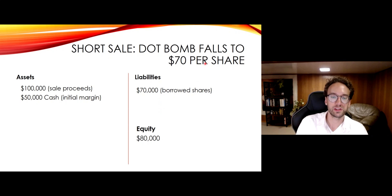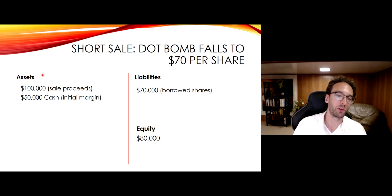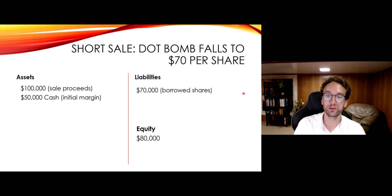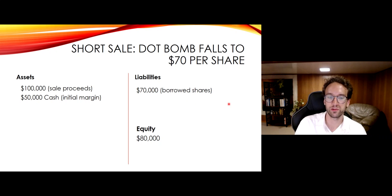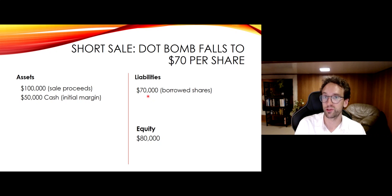Now, suppose this drops to $70 per share. Our assets stay the same — your assets are fixed in this case. What changed is your liability. What you owe has gone down in value. You only owe $70,000 of stock, because if you bought it back, that's how much it would cost you now. Because your assets have stayed the same but your liability has decreased, your equity has gone up. It's increased by the amount the liabilities decreased, which is $30,000. So your equity has increased $30,000 to $80,000.